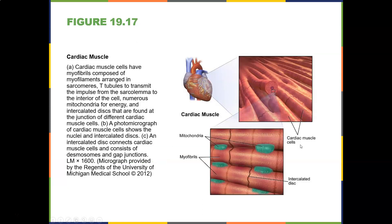Cardiac muscle cells have myofibrils composed of myofilaments arranged in sarcomeres, T-tubules to transport the impulse from the sarcolemma to the interior of the cell, numerous mitochondria for energy, and intercalated discs found at the junction of different cardiac muscle cells. A photomicrograph shows the nuclei and intercalated discs. An intercalated disc connects cardiac muscle cells and consists of desmosomes and gap junctions, which help with the electrical conduction of the heart.